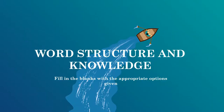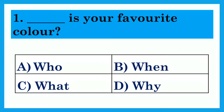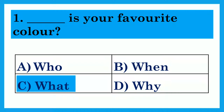Word structure and knowledge: fill in the blanks with the appropriate options given. Dash is your favorite color. Option A: Who? Option B: When? Option C: What? Option D: Why? The answer is 'What' — What is your favorite color?